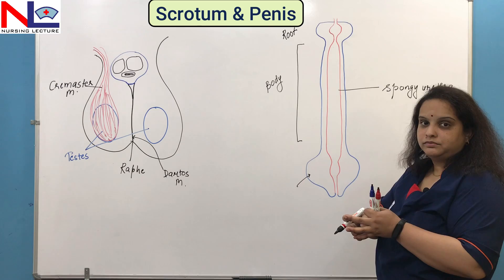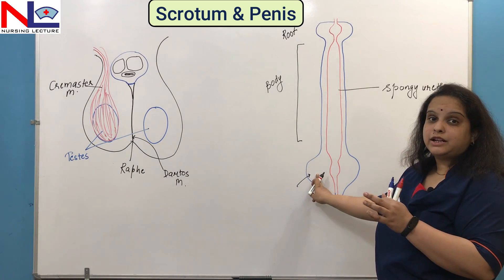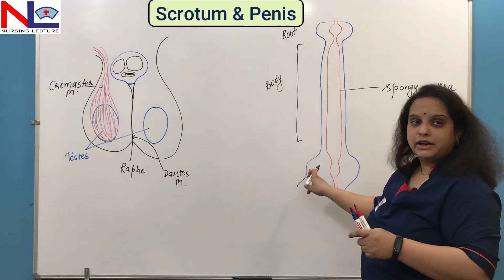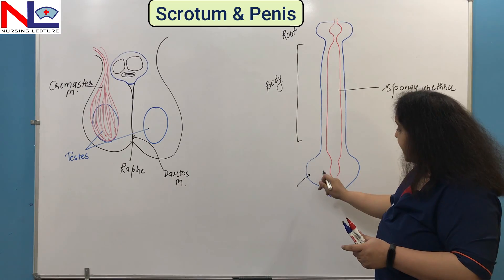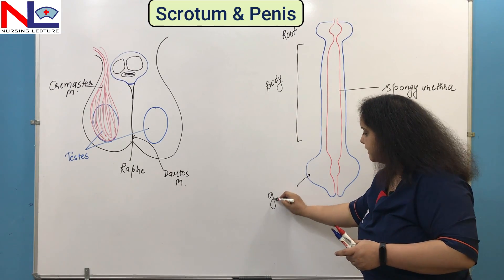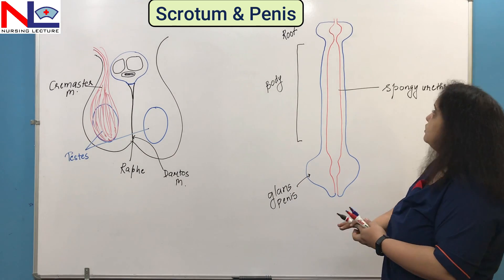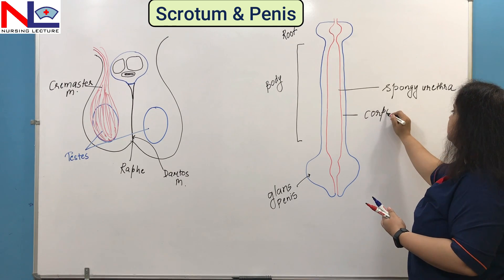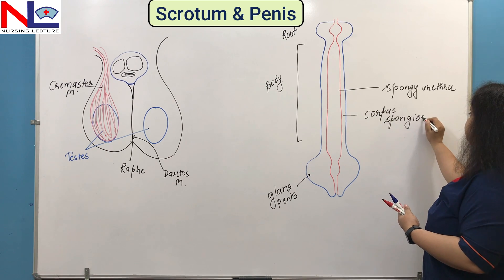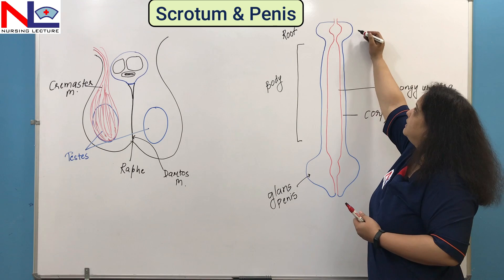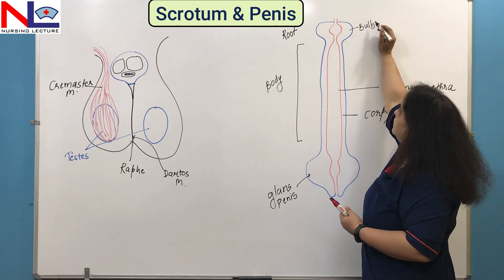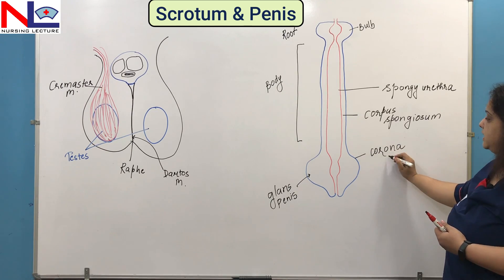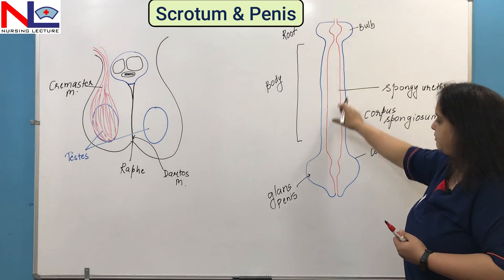The distal part is acorn-shaped — named after the acorn fruit of the oak tree — and is called the glans penis. The margin of the glans penis is called the corona. The parts of the corpus spongiosum are the bulb (the attached part), the body, and the glans penis.